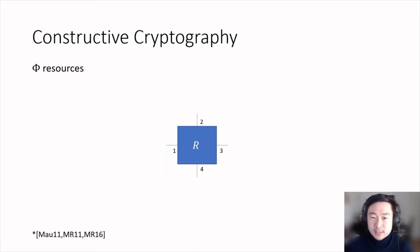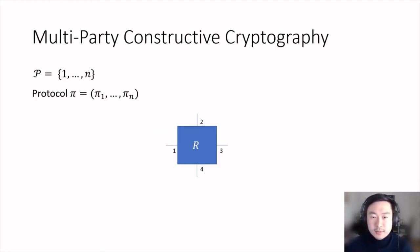This idea of having specifications and constructions is adopted in the Constructive Cryptography Framework by Maurer and Renner, where the set phi is a set of objects that are systems called resources with interfaces to the parties. The parties can interact with the system via their corresponding interfaces and apply a so-called converter, which can be thought of as a system that executes the protocol engine. In the multiparty setting, we consider systems with N interfaces, one per party. A protocol then consists of a tuple of converters, also one per party, and the construction consists of each party applying its converter.